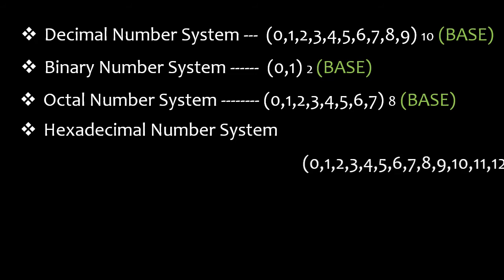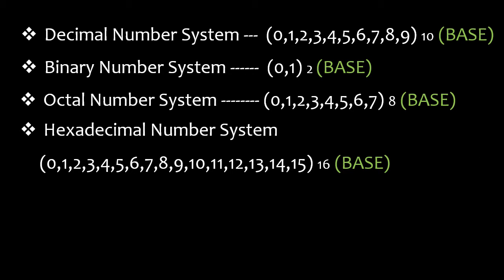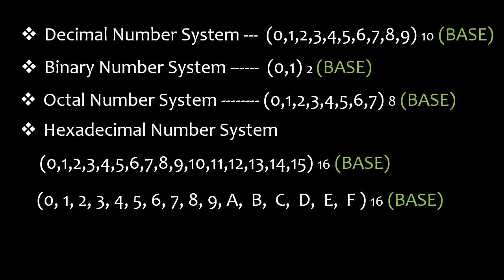The hexadecimal number system starts from 0 and ends at 15, with 16 digits, so its base is 16. From 0 to 9, there are normal numbers, and from 10 to 15 we use alphabets: A as 10, B as 11, C as 12, D as 13, E as 14, and F as 15.